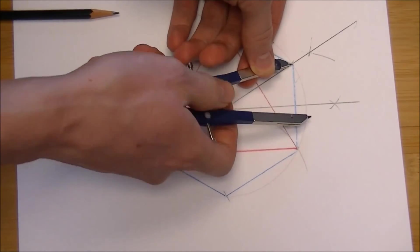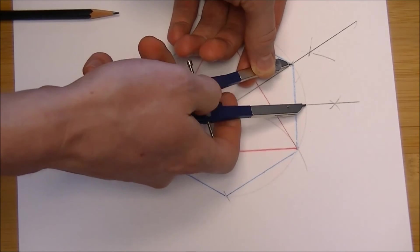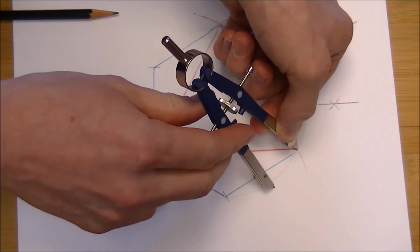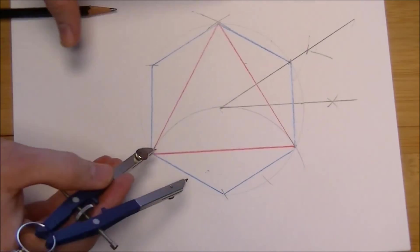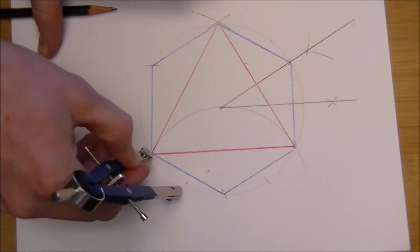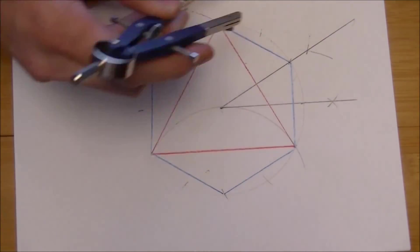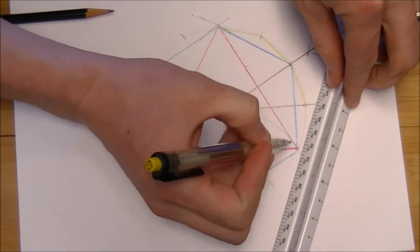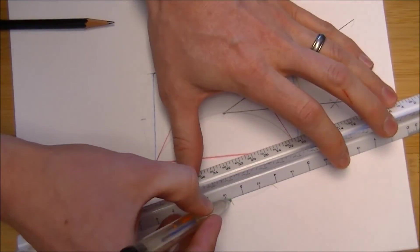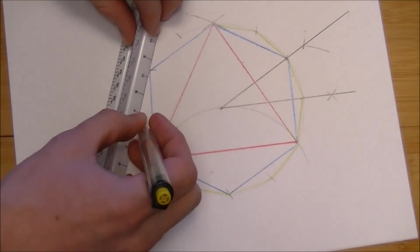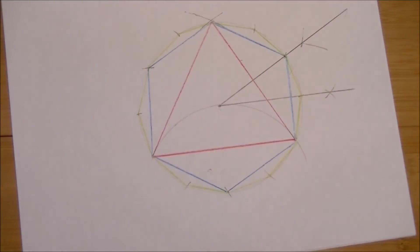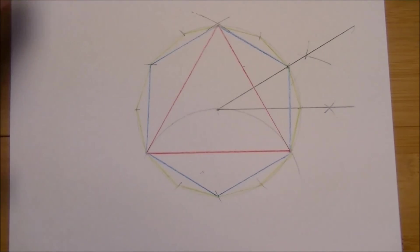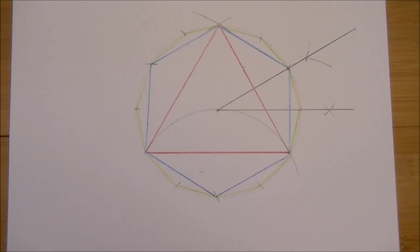Now we'll come back and measure out that distance from there to there, and that should be the same distance that we mark all the way along the outside of this circle. So, there we have our triangle, hexagon, and then our twelve-sided regular polygon right there.